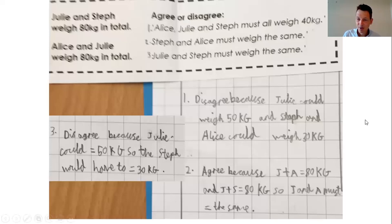Again, child's work here. So we have, Alice, Julie and Steph must all weigh 40 kilograms. That says you disagree because Julie could weigh more and Steph could weigh less. But Steph and Alice must weigh the same in this instance. And we've got explanations to why that is. So we have this structure of we all build the understanding, and then the explain and extend prompts allow us to really deepen and go from there.